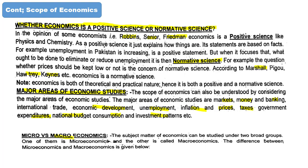Economics is divided into microeconomics and macroeconomics. Microeconomics deals with individual units — individual consumers and individual income. Macroeconomics deals with the economy as a whole, including national income.